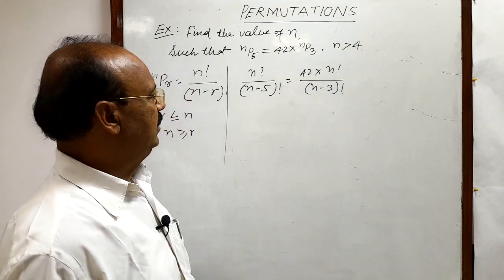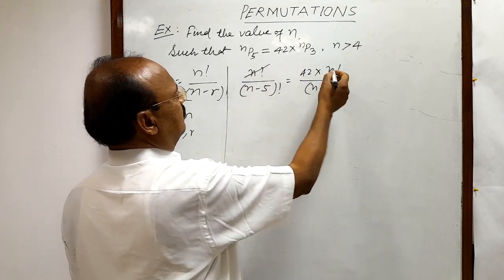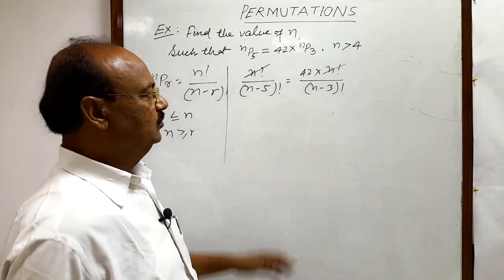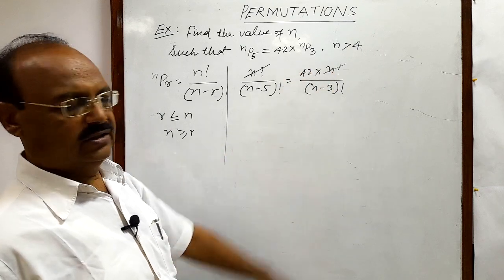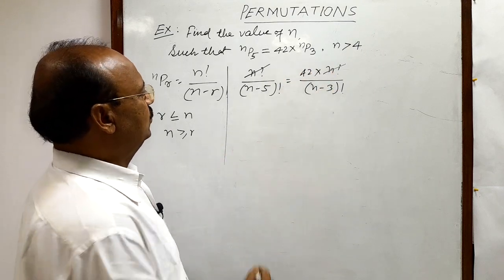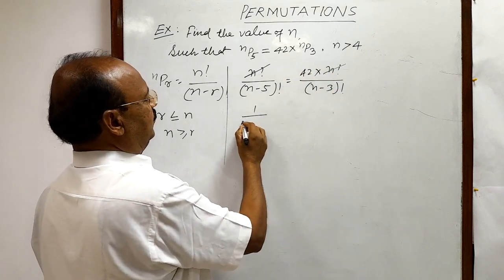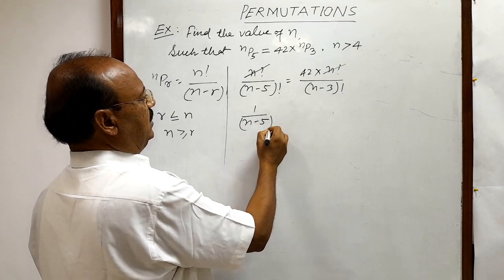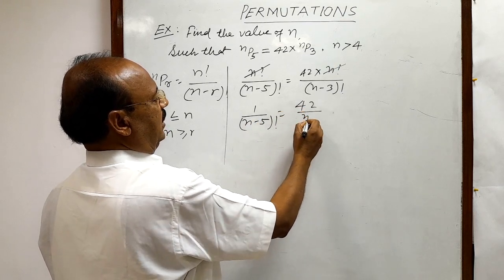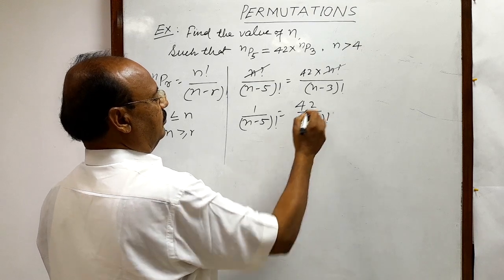Now, let us simplify it. So, first of all, this N factorial will be cancelled out from both sides in numerator. So, we are getting here 1 by N minus 5 factorial is equal to 42 by N minus 3 factorial.